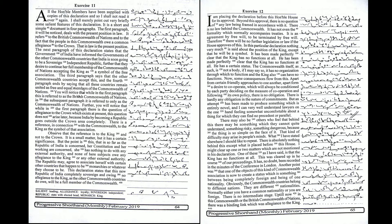The Republic may agree to associate herself with certain other countries that happen to be monarchies or whatever they choose to be. This declaration states that this new Republic of India, completely sovereign and owing no allegiance to the king as the other Commonwealth countries do owe, will be a full member of the Commonwealth. I am placing the declaration before this honourable house for its approval.